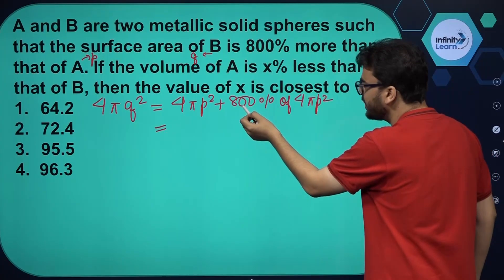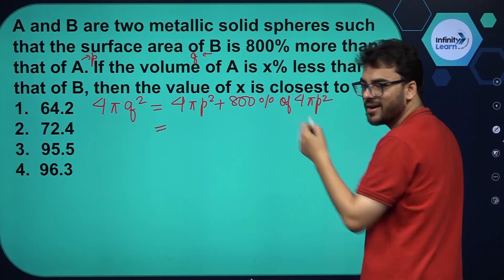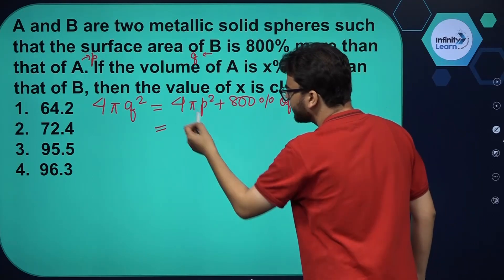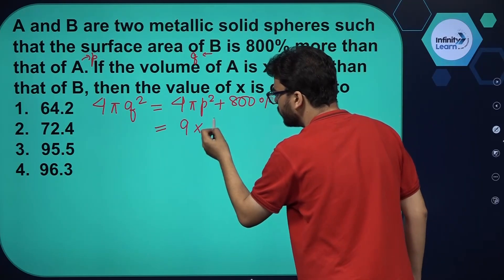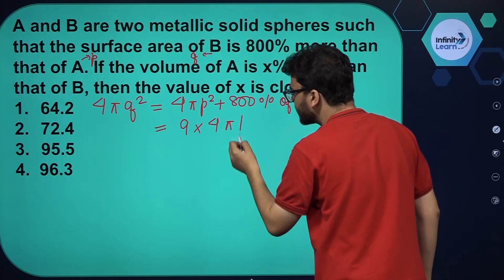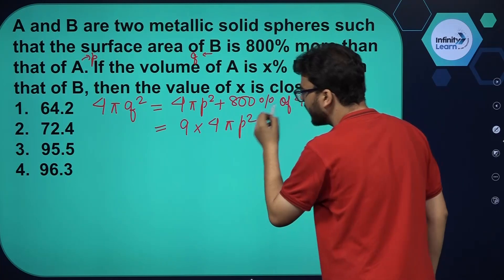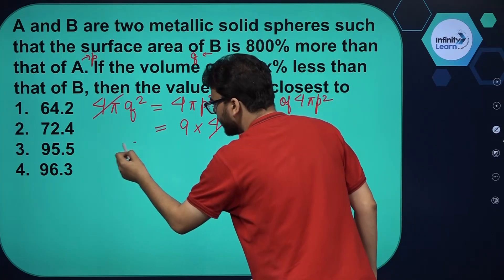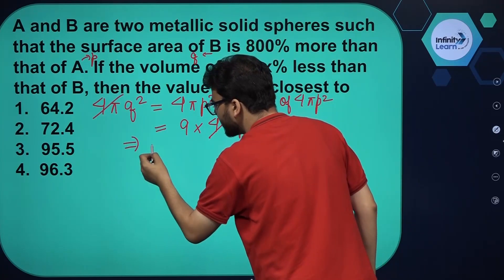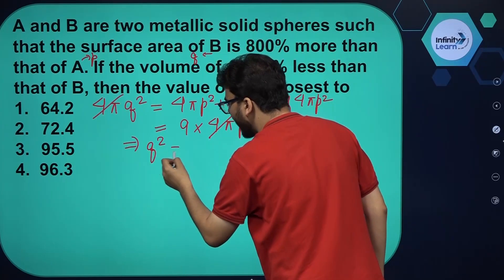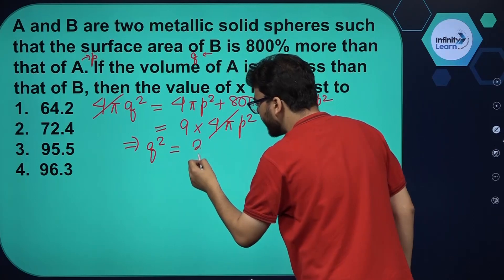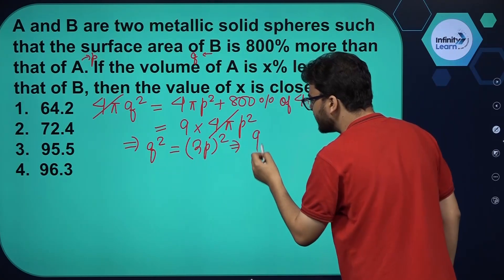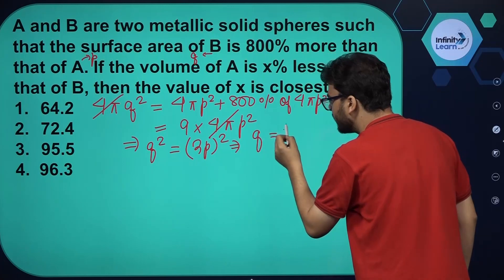800% means 800 divided by 100, which is 8. So 8 plus 1 is 9. This becomes 9 × 4πP². We can cancel out 4π from both sides. If we further simplify, we get Q² = (3P)², or Q = 3P.